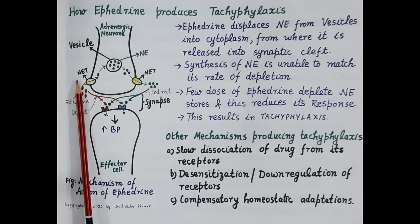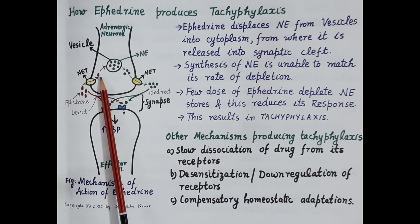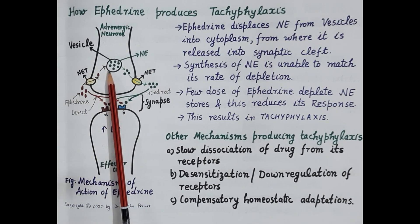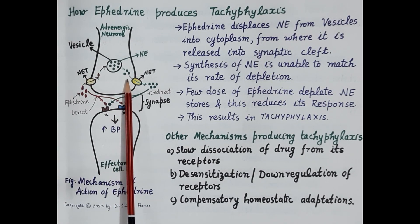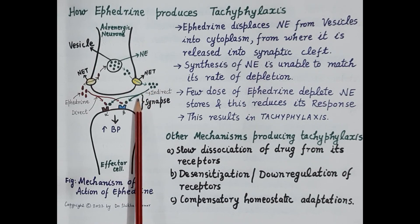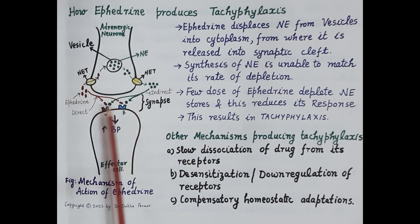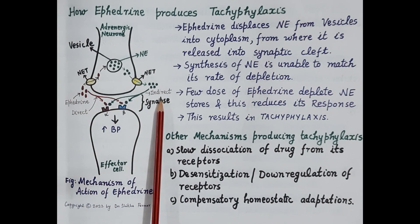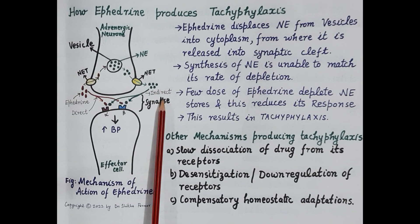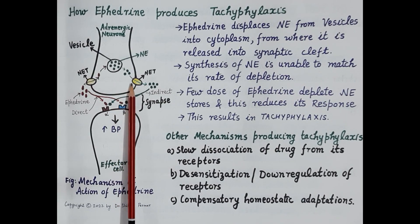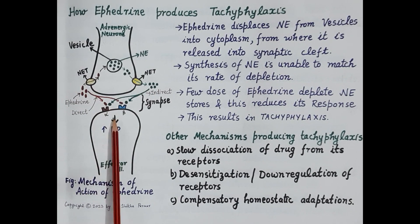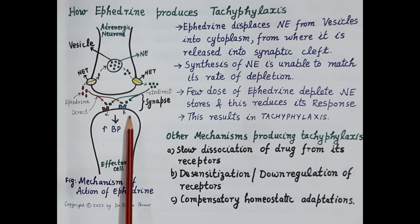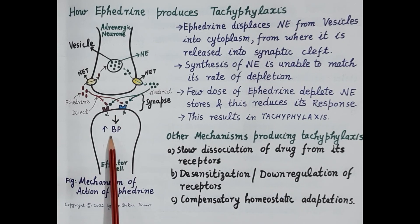Ephedrine, shown here in red, enters the adrenergic neuron by utilizing norepinephrine transporters. After entering the adrenergic neuron, ephedrine displaces norepinephrine from the vesicles into the cytoplasm, from where norepinephrine is released into the synaptic cleft. Ephedrine acts both directly and indirectly. Primarily, ephedrine acts indirectly — the increase in blood pressure is mediated by this release of norepinephrine from the vesicles. Ephedrine also directly stimulates alpha and beta receptors, which increases blood pressure.